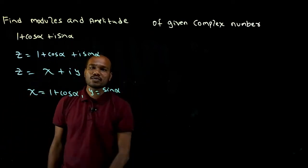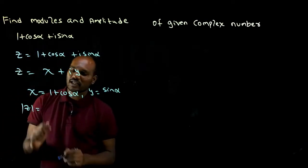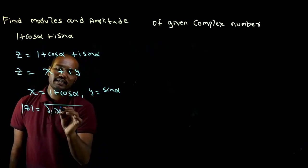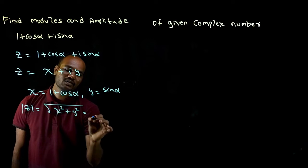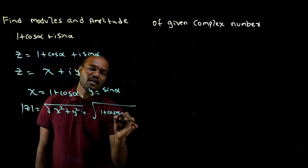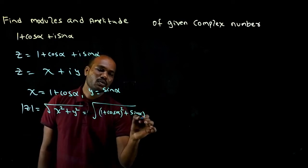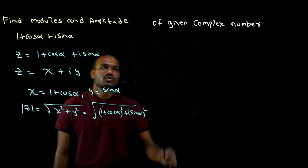We have to find the modulus first. What is the standard formula for modulus? Modulus of Z is equal to root of X square plus Y square. If I substitute that, I'll get 1 plus cos alpha whole square plus sine alpha whole square.